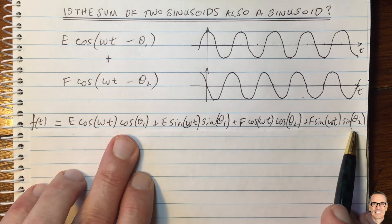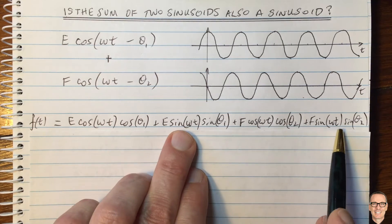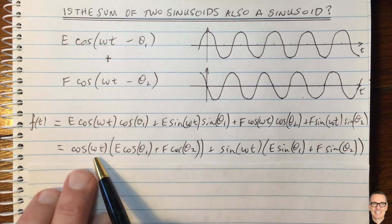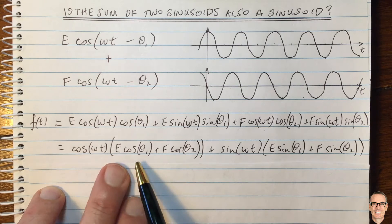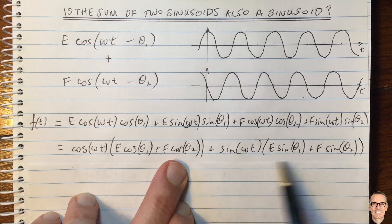Now we're just going to collect the terms together. We're going to collect the cos omega t terms together. So these two and the sine omega t terms. So that's what we've done here. Cos omega t. And we've got the E cos from here and the F cos from here and so on.